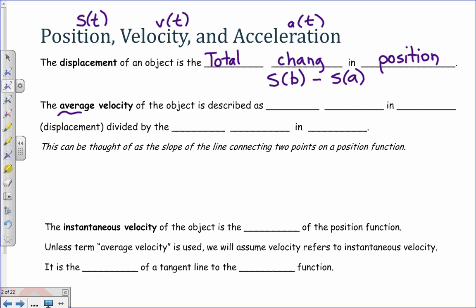When you hear the words average velocity of the object, it's described as the total change in position. So that's the change in the y values divided by the change in time, the total change in time.